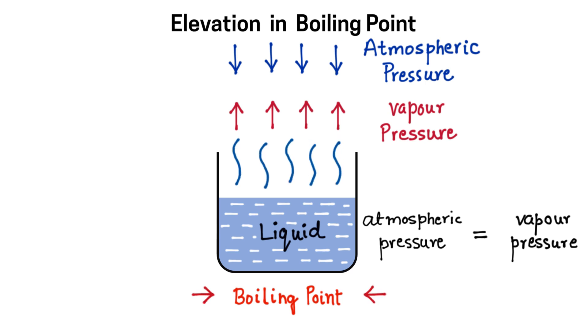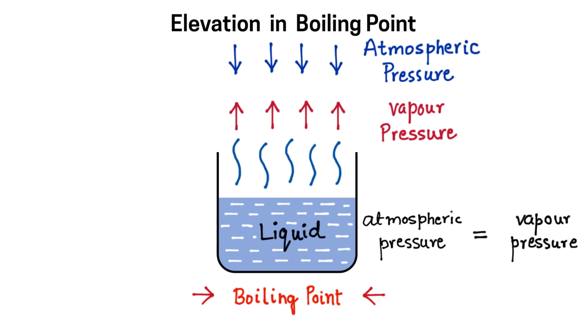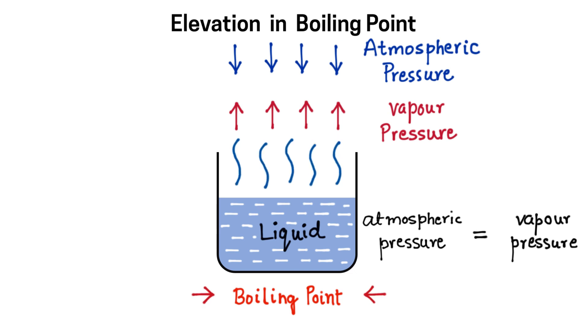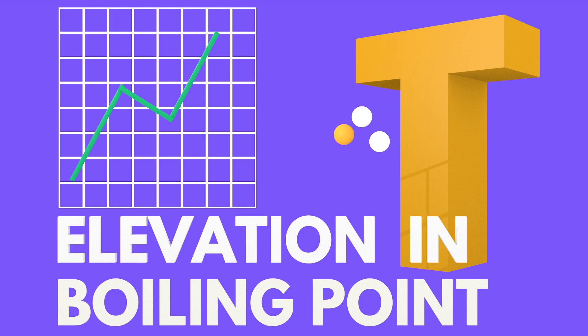This is the most accurate definition of boiling point. Boiling point is that point at which atmospheric pressure and vapor pressure become equal. Now I will use this definition in the graph. But before that, let's understand what elevation in boiling point means.